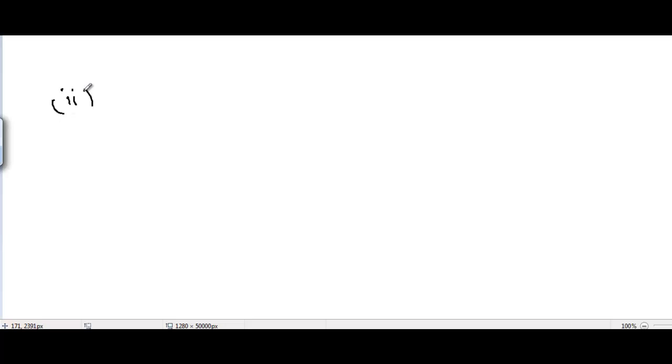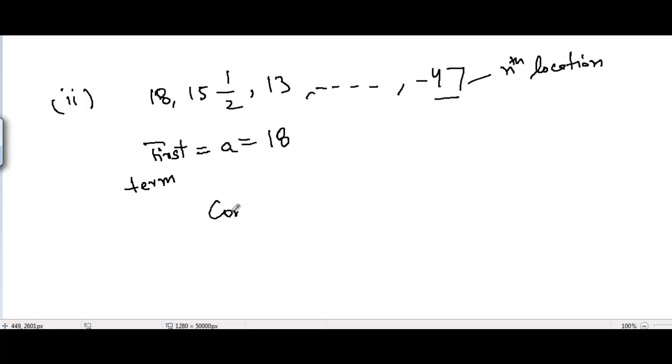Part number 2: we have 18, 15½, 13, and we have missing terms and -47 at the last. Let's suppose that it is present at nth location. Now here first term a = 18 and common difference here...